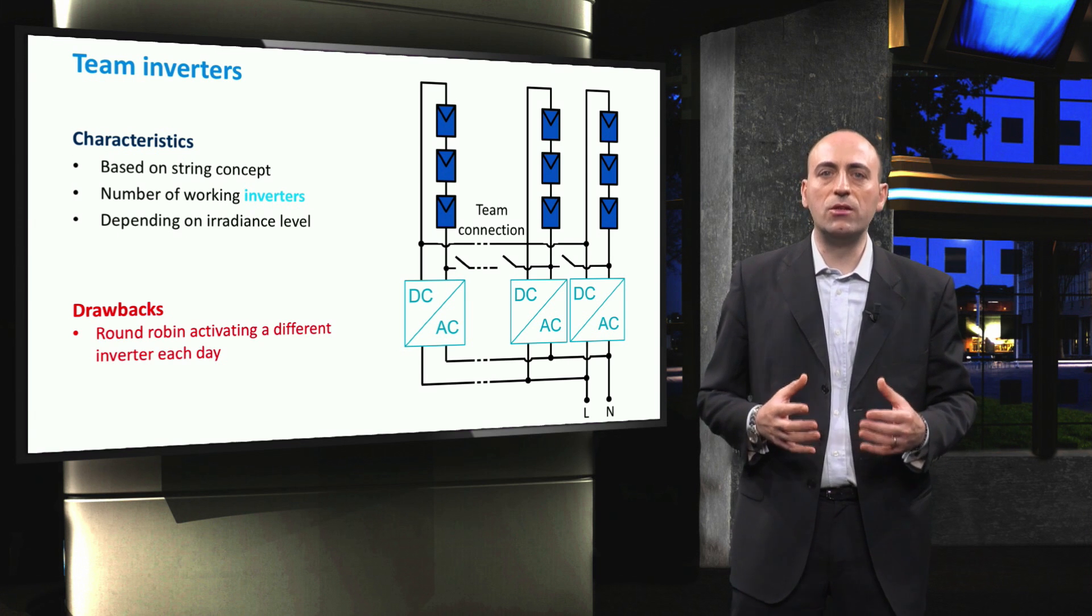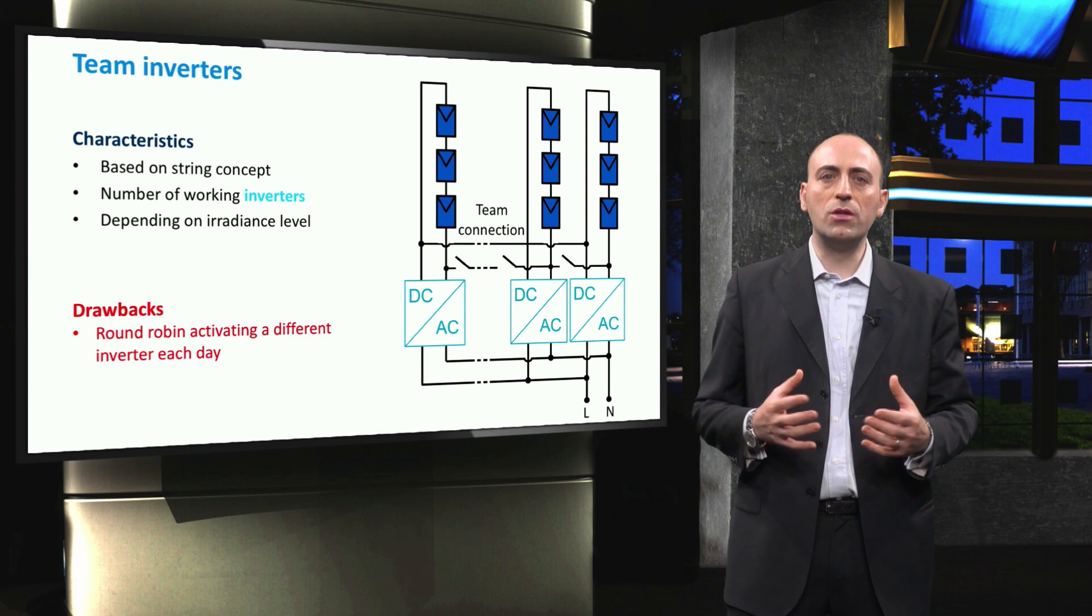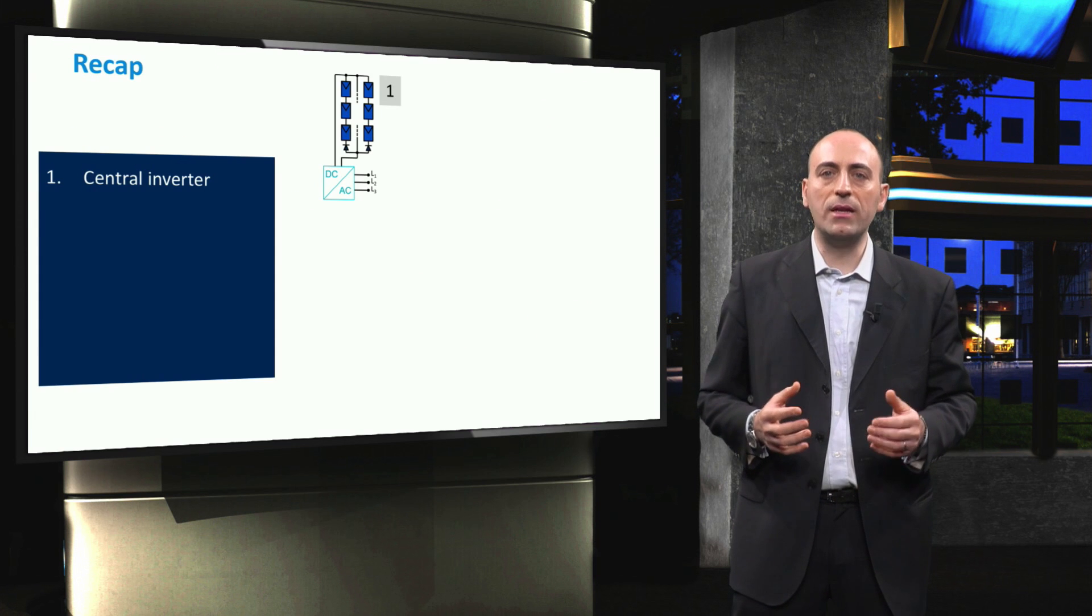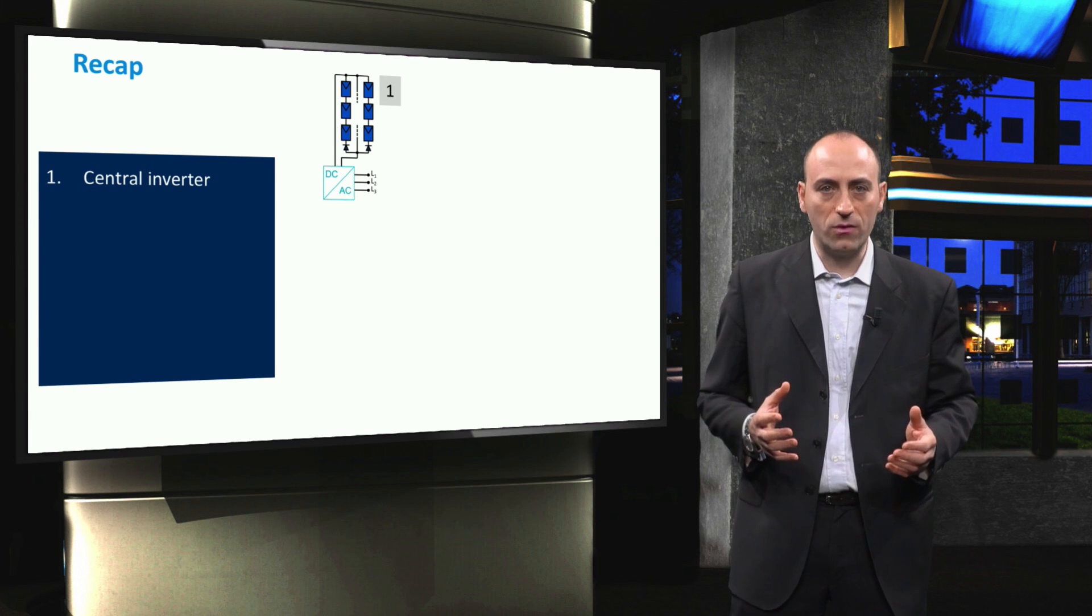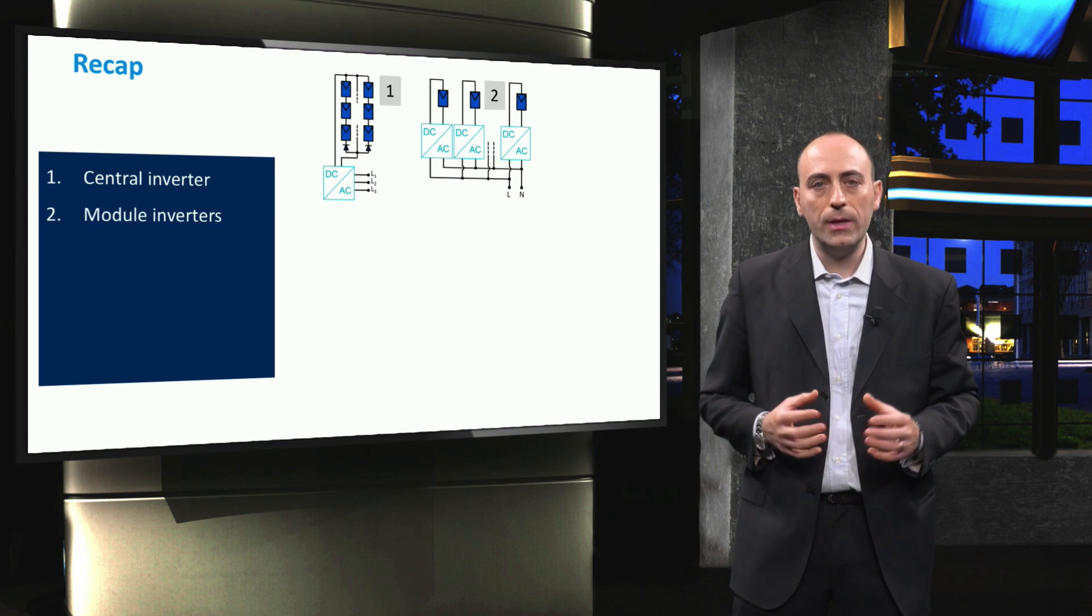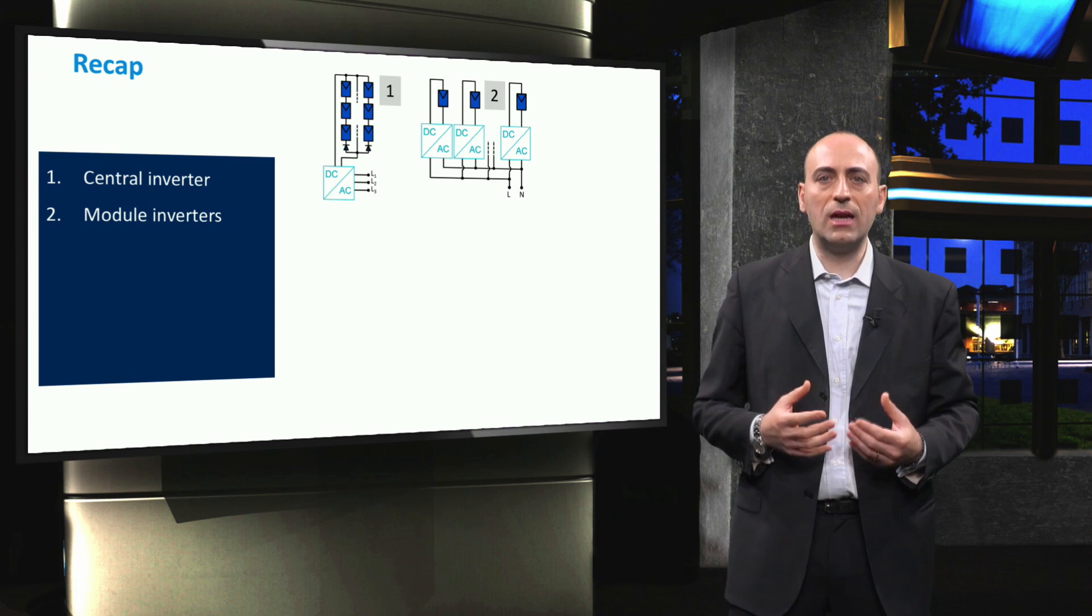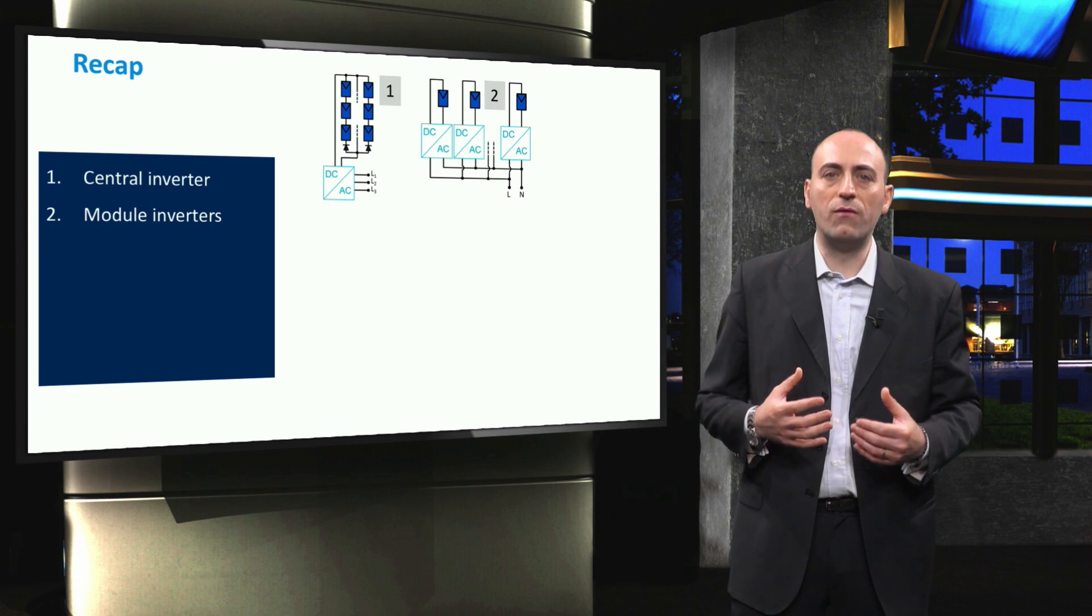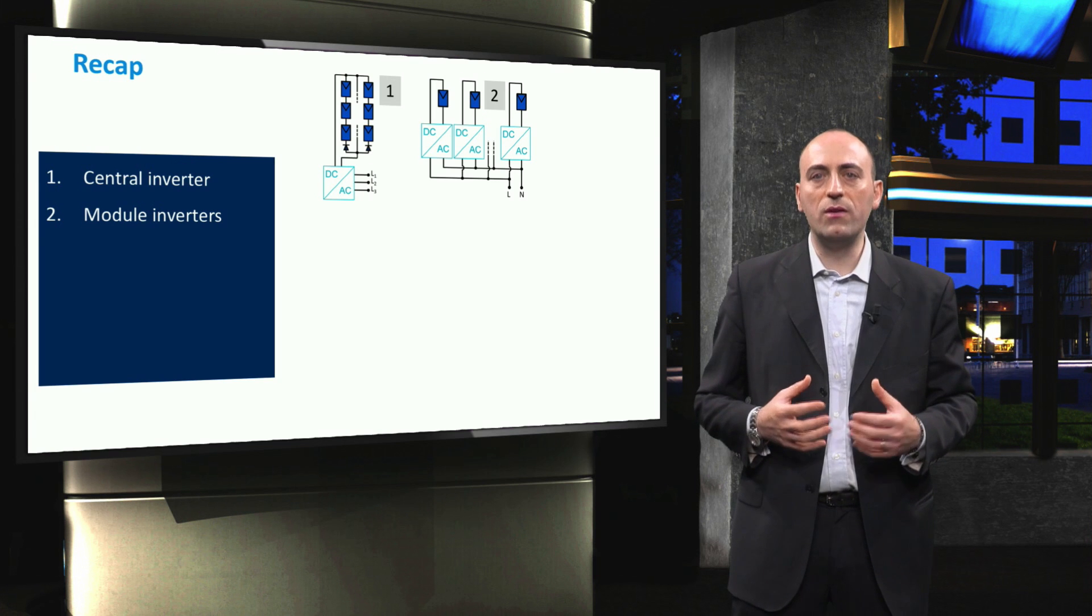Of course, with this master-slave fashion, we need to have an additional intelligent circuit that basically makes a round robin in the usage of all these inverters, in order to not always use the same one. To sum up, in this video we have seen six main installation concepts for solar inverters. The first and easiest architecture is the central inverter, which connects in parallel different strings directly to one single tri-phase inverter. The second type features module inverters. Here, some micro inverters are directly connected to one or a few PV panels. As we have seen, this design makes the system more flexible and easier to expand. On the other hand, the cost can become prohibitive if there is a high number of modules.